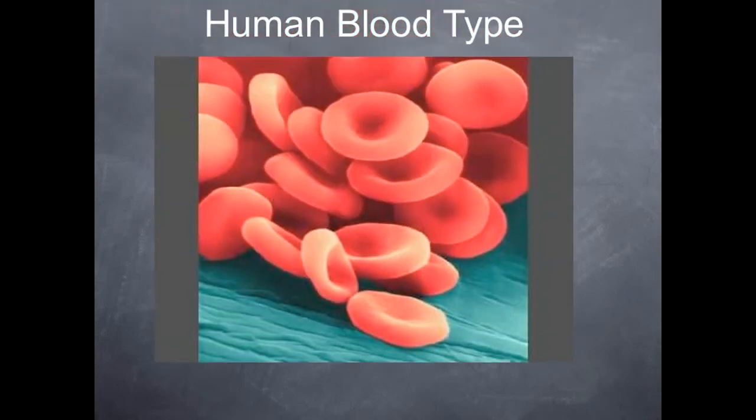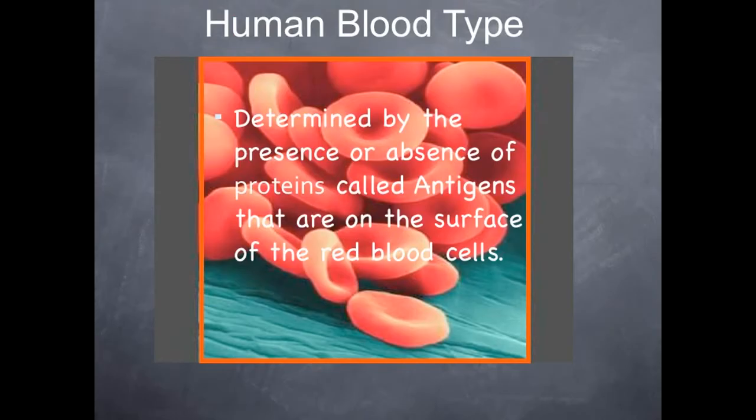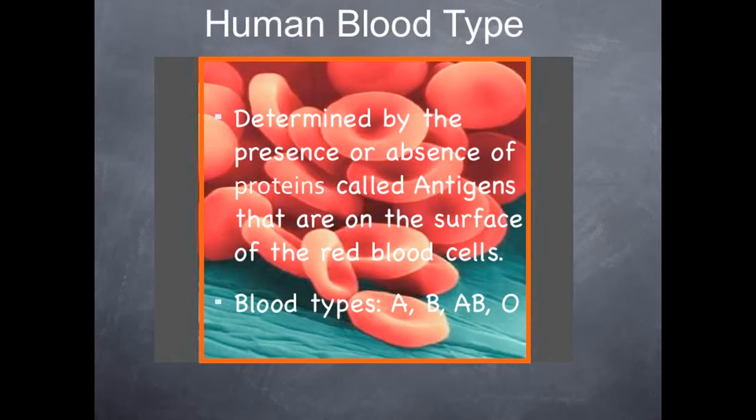Your blood type is determined by the presence or absence of proteins on the surface of the red blood cells, and those proteins are called antigens. The possible blood types are blood type A — A antigen — blood type B — B antigens — blood type AB, which means you have both A and B antigens, and then blood type O. A person with blood type O has no antigens on the red blood cells.